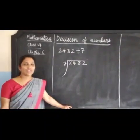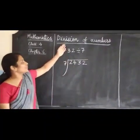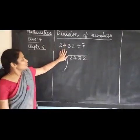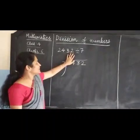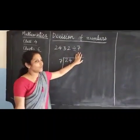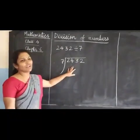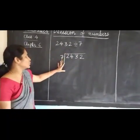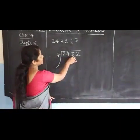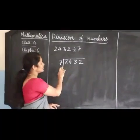Hello students. Today we are going to learn division of numbers. Here we are going to divide a 4-digit number by a 1-digit number. We have learnt this division in class 3, but we are going to revise it once. Here the dividend is 2432 and the divisor is 7.